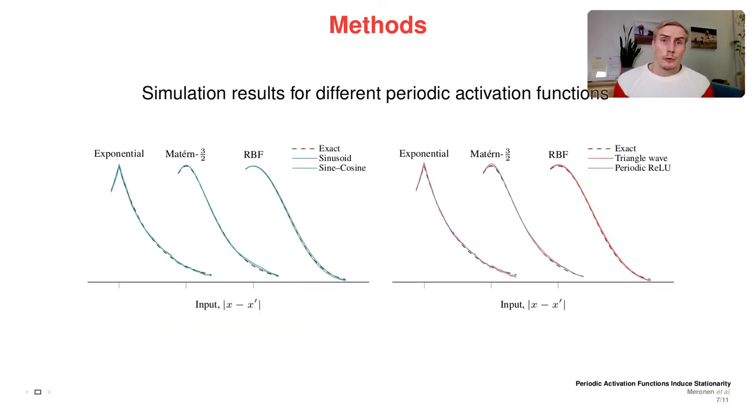To verify our theoretical results, we performed simulations to see how well the neural network counterparts match the exact Gaussian process kernels. This is a 1D kernel simulation to measure that. Looking at the results, we can see that all different periodic activation functions tested here are able to reproduce the exact kernel behavior with only small errors.